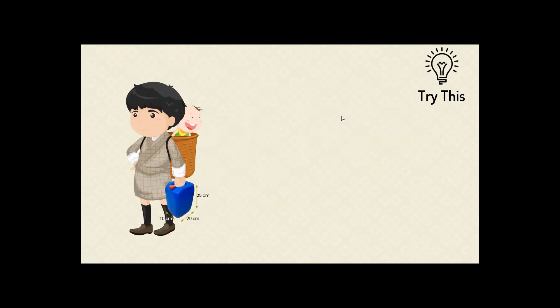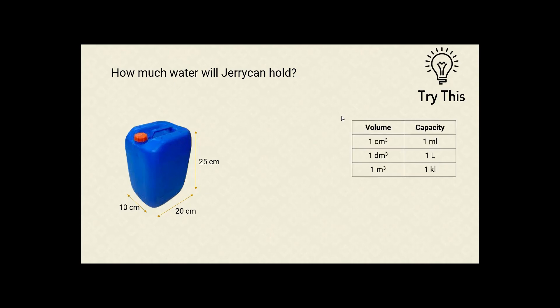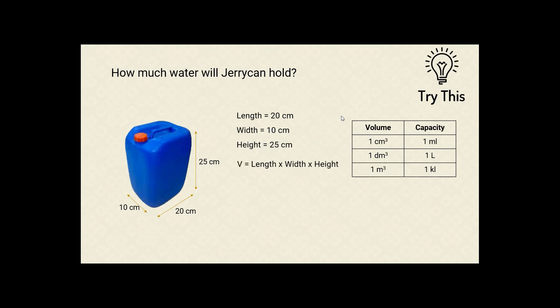Try this yourself. This boy is carrying a jerry can. How much water will this jerry can hold? The dimensions given are: length is 20 centimeters, width is 10 centimeters, and height is 25 centimeters. The guide is given as well — pause this video and try it yourself. The volume formula is length times width times height, so 20 times 10 times 25 gives us 5000 cubic centimeters. From the guide, 1 cubic centimeter equals 1 milliliter, so the capacity is 5000 milliliters, or 5 liters.